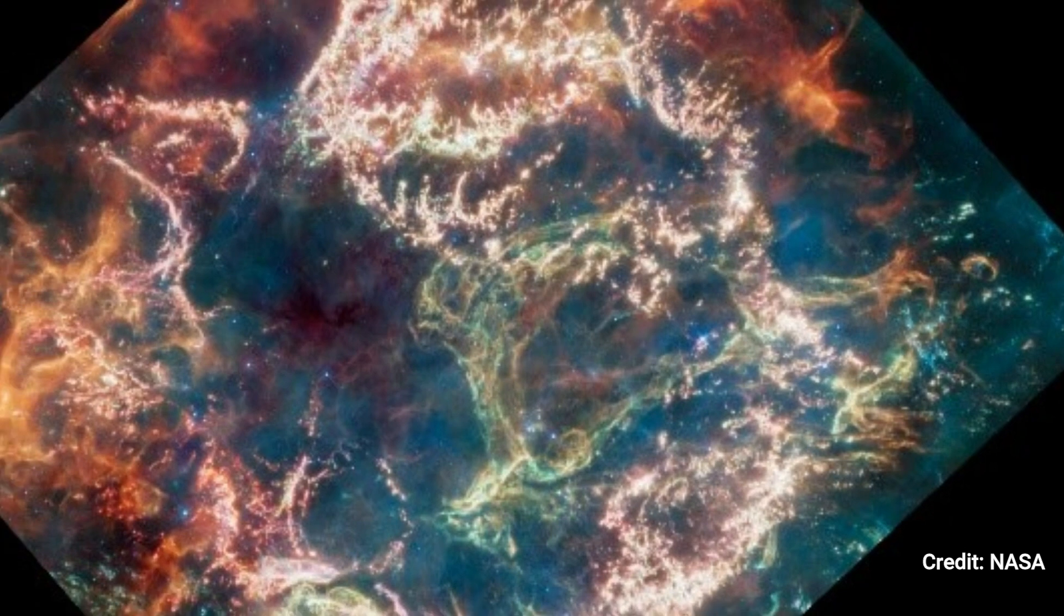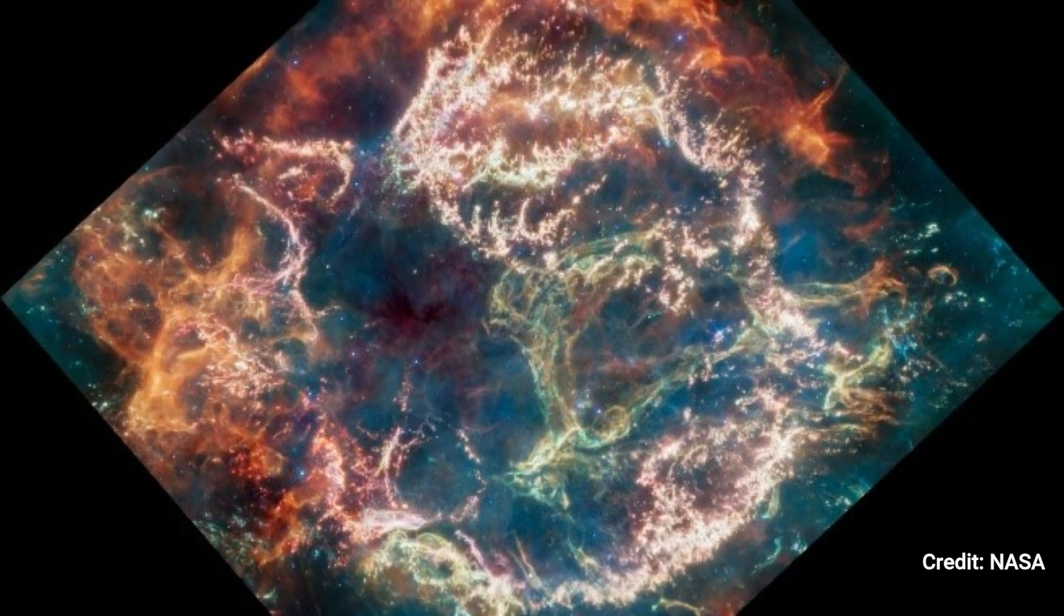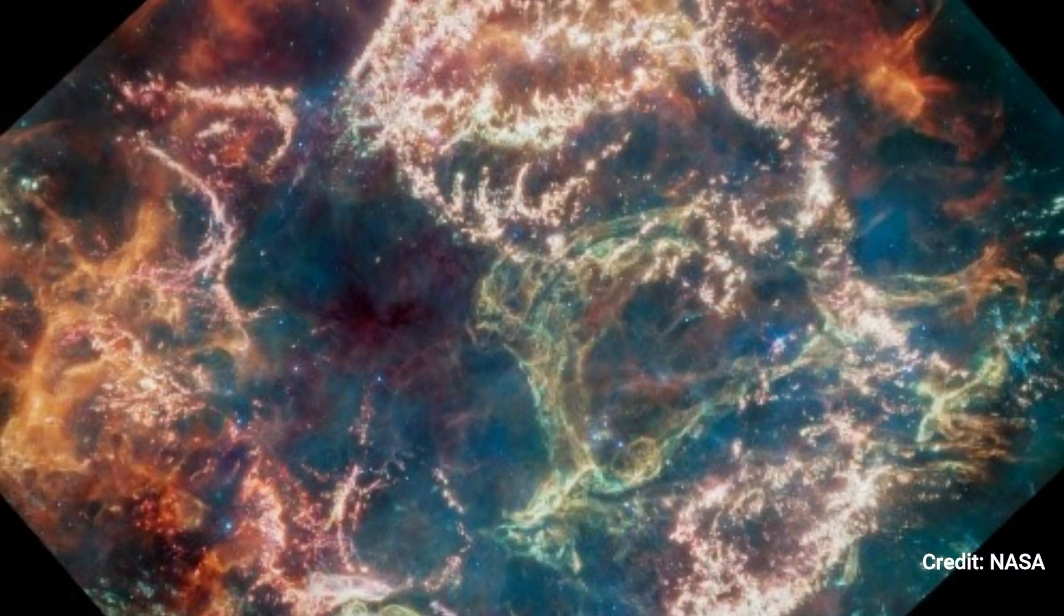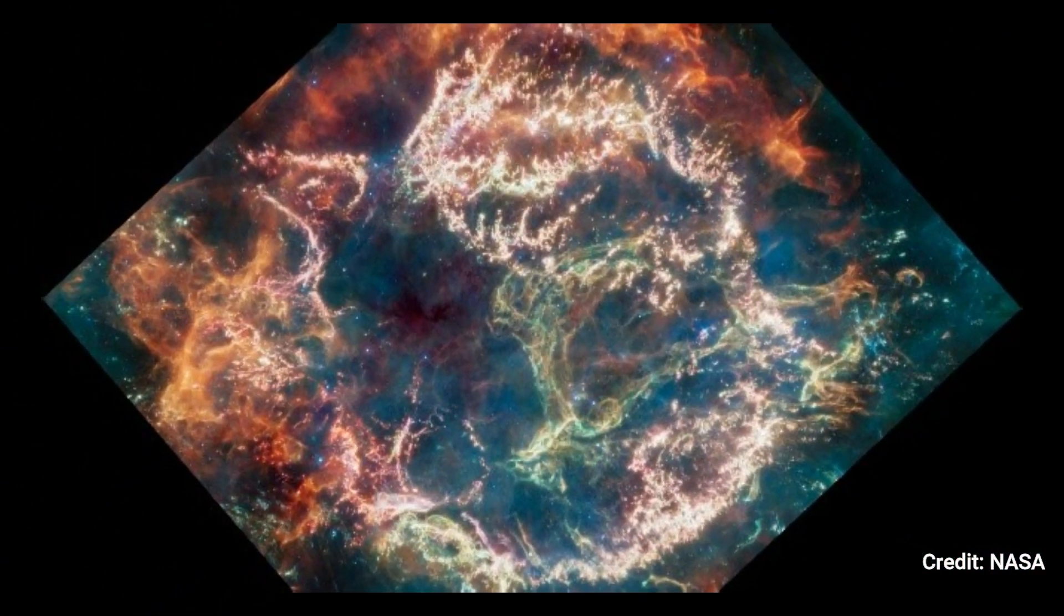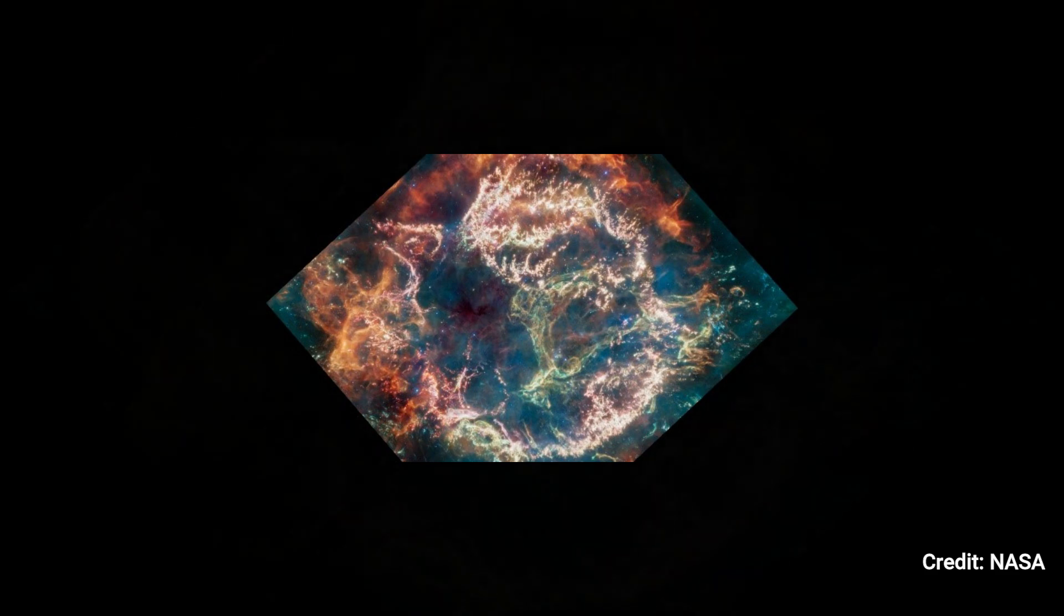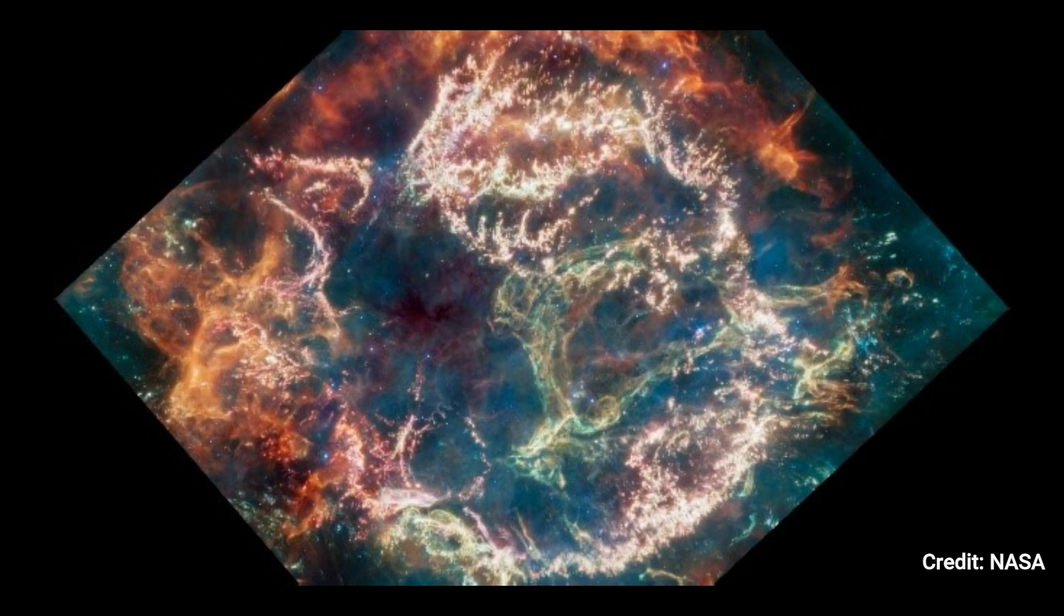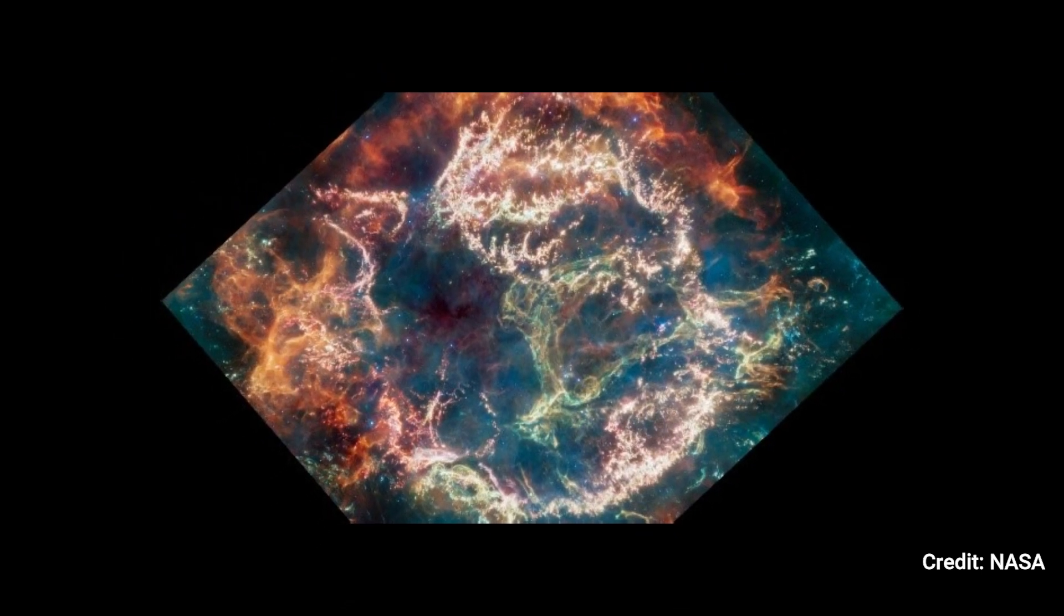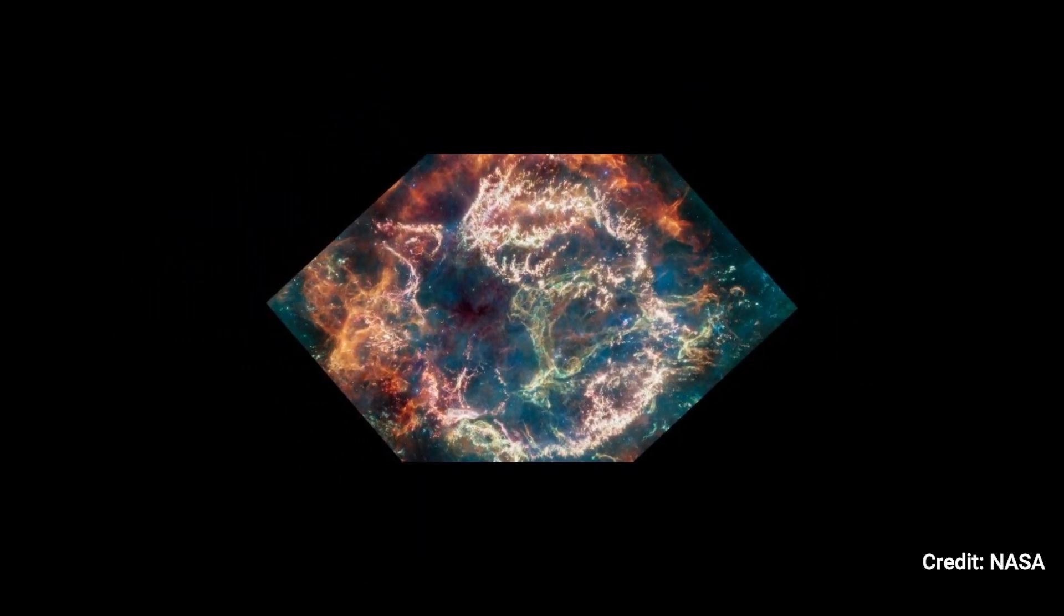This is when the expelled debris from the destroyed star collides with the surrounding circumstellar material. This outer shell is filled with variegated filaments of brilliant pink studded with clusters and knots. A green loop spans across the right side of the center hollow. Its structure and intricacy are unexpected and difficult for scientists to comprehend.